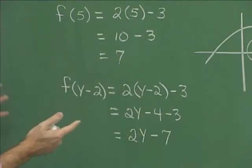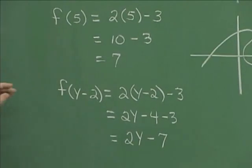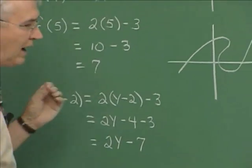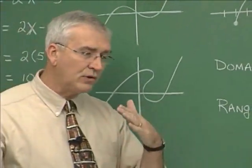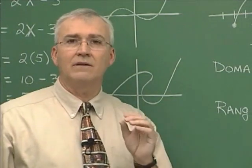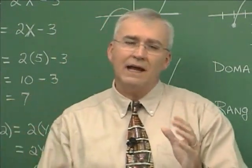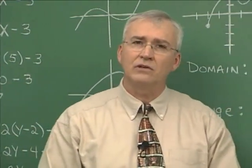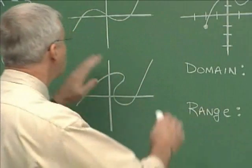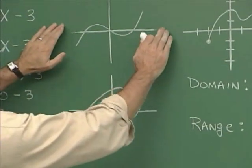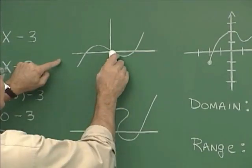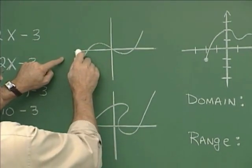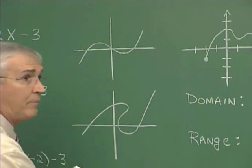So that's all there is to it — that's what function notation is all about. Now graphically, functions have a particular kind of appearance, and this goes back to the definition of a function. This is the graph of a function because every value of x has only one y partner.